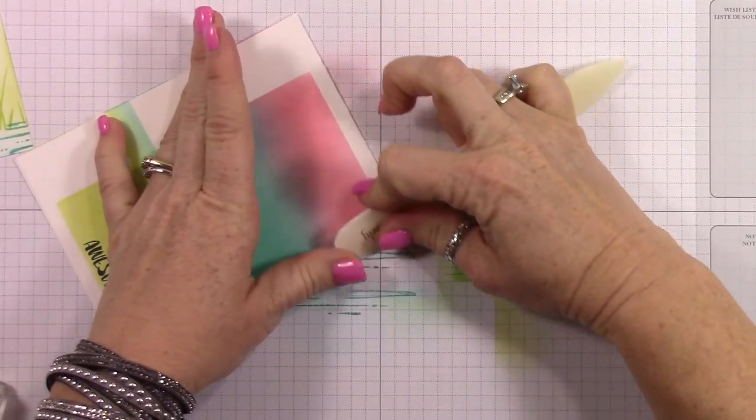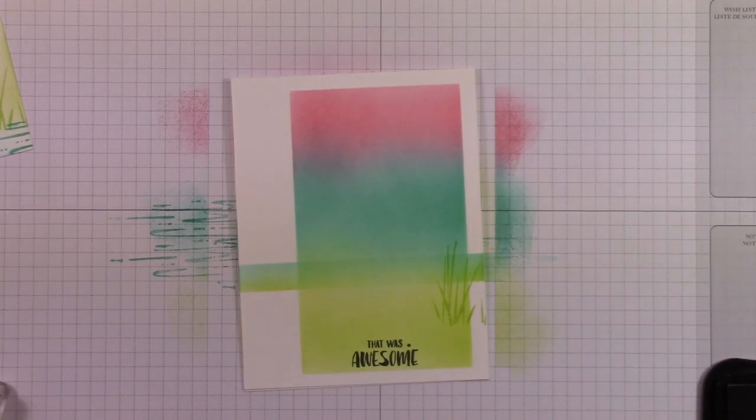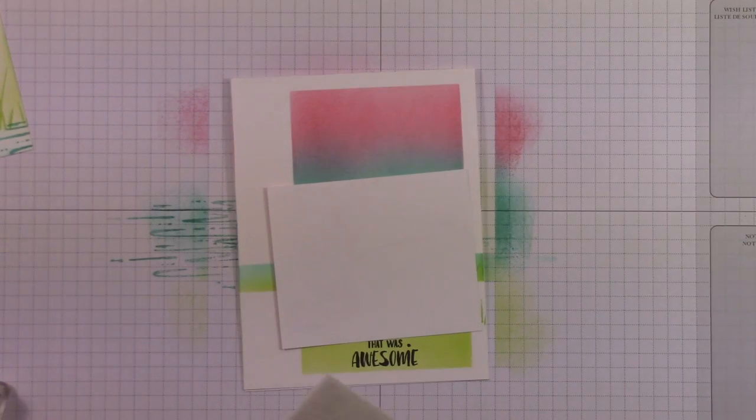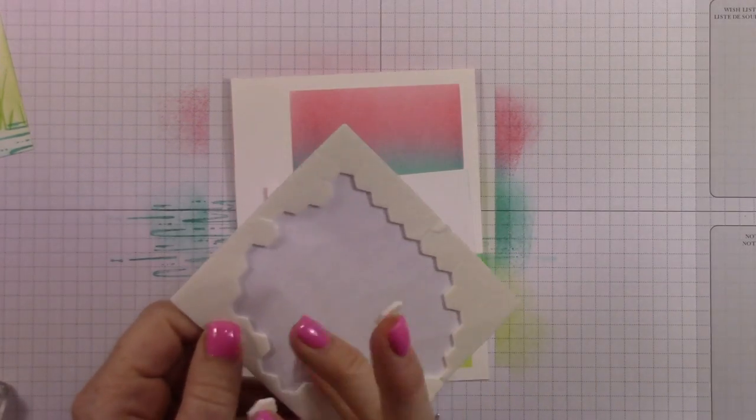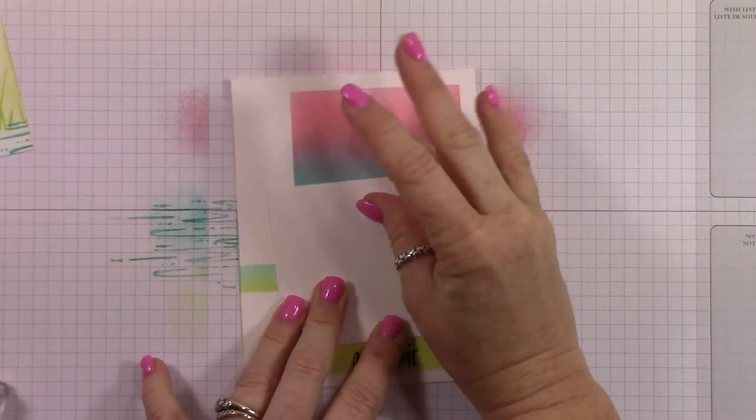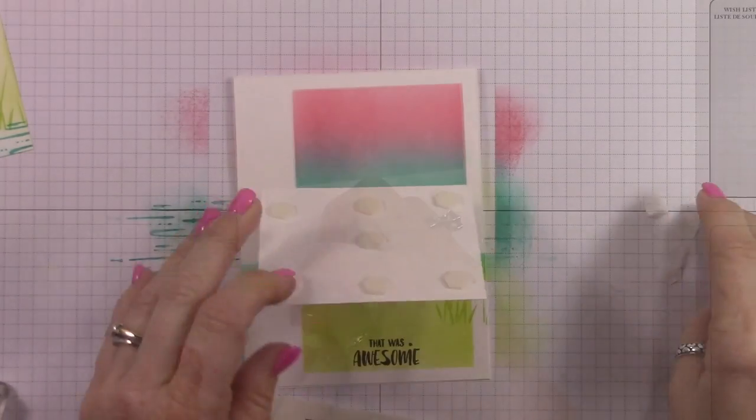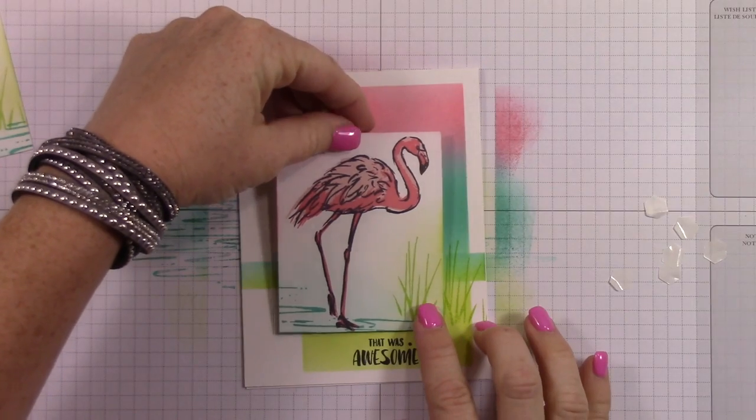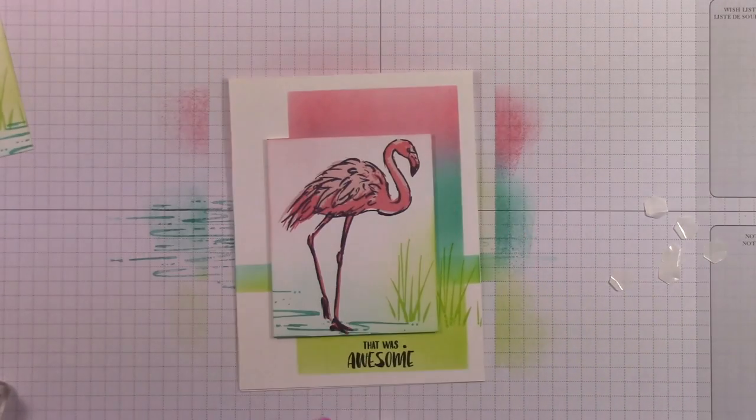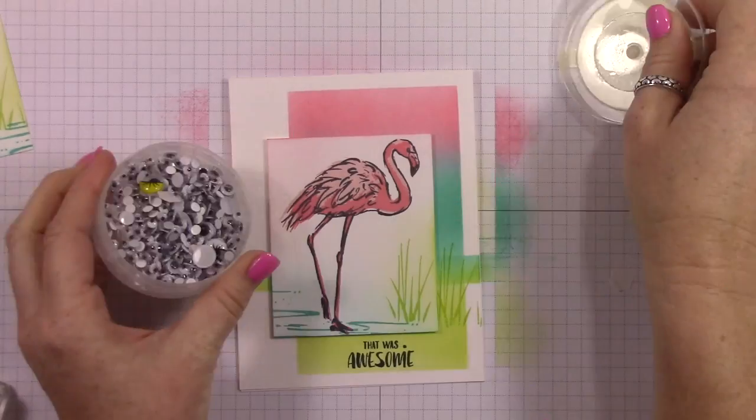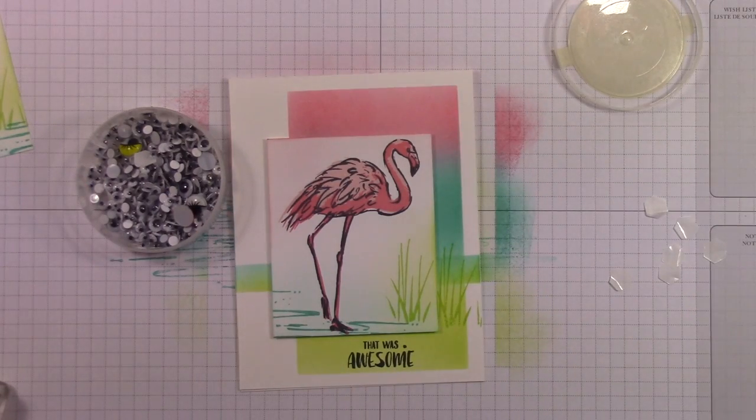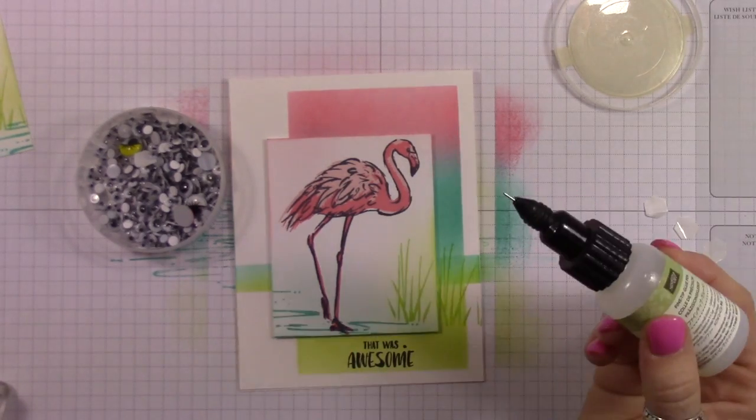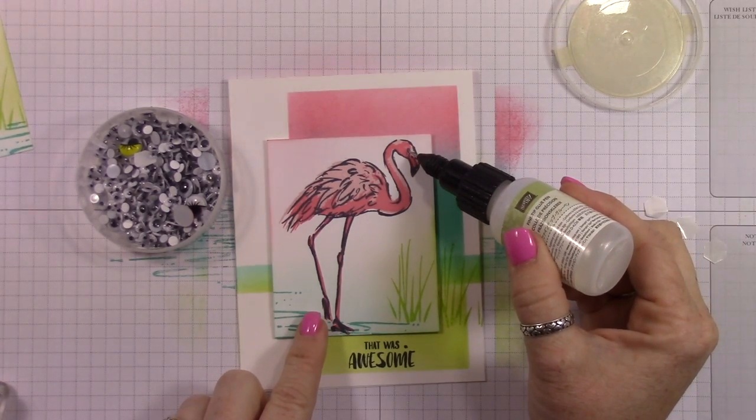I'm just going to re-burnish the edges here with my bone folder, and then I'm going to add on my flamingo piece. I want to pop it up, of course. It's very rare I do a card that doesn't use dimensionals. Every once in a while I do a one-layer card, but for the most part I like to pop my stuff up. I'm just going to layer it down here. I did add a googly eye. I forgot about that. I'm using the fine tip glue pen.